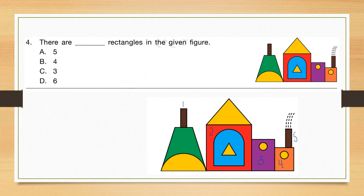Question number 4: There are blank rectangles in the given figure. Let's count: first, second, third, fourth, and fifth. There are five rectangles. So the correct answer is option A, 5.